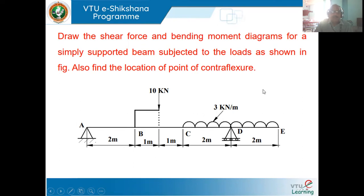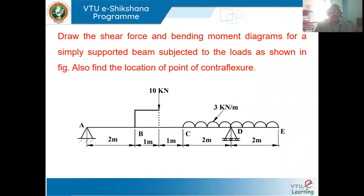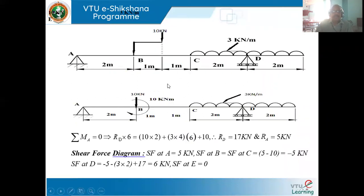Since it is a simply supported beam, we have to find out support reactions RA and RD. For finding support reactions, we have to make use of static equilibrium conditions. One is that total upward forces equals total downward forces. The second is that the sum of clockwise and counter-clockwise moments about any point must be equal to zero. Taking clockwise positive, counter-clockwise moments will be negative.